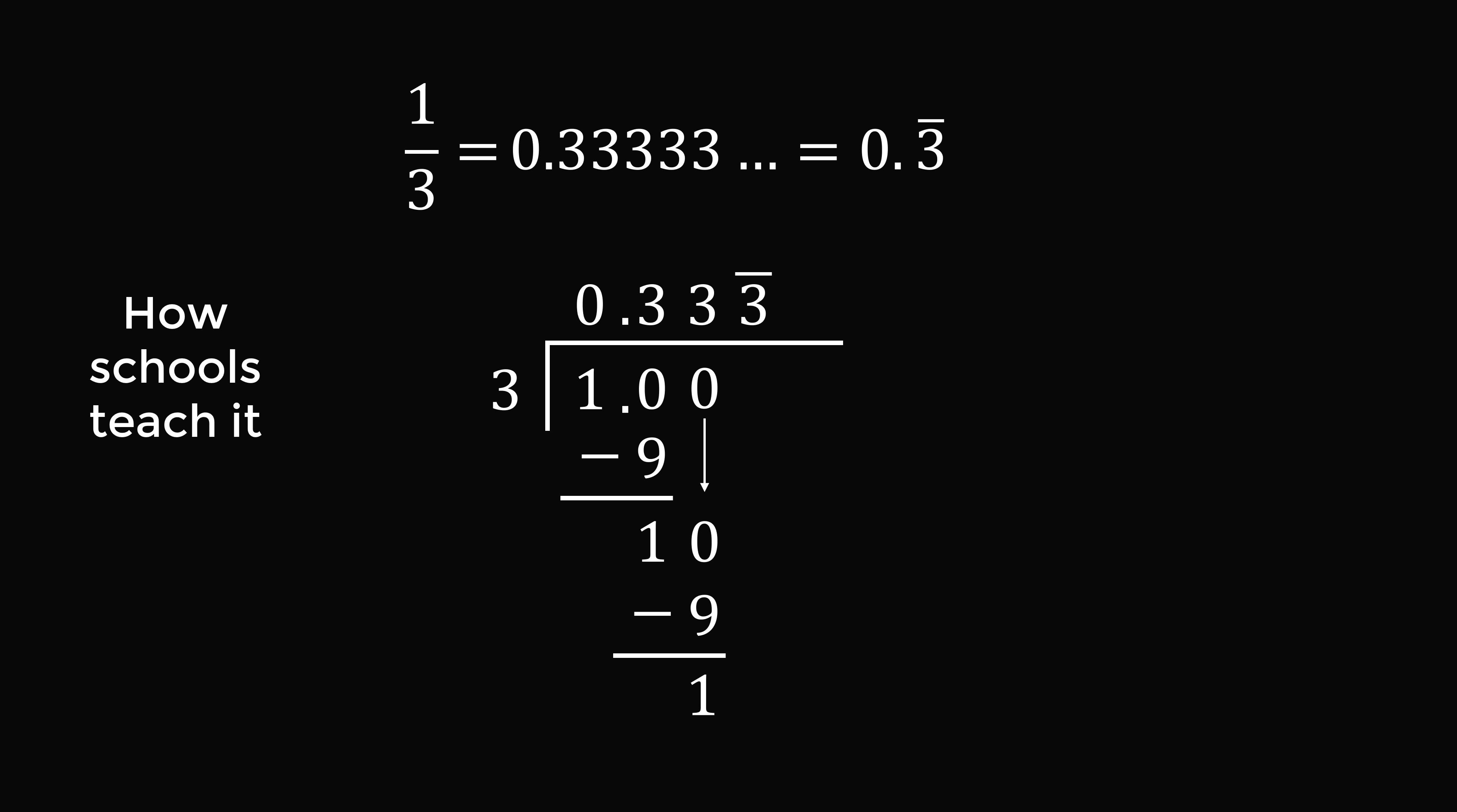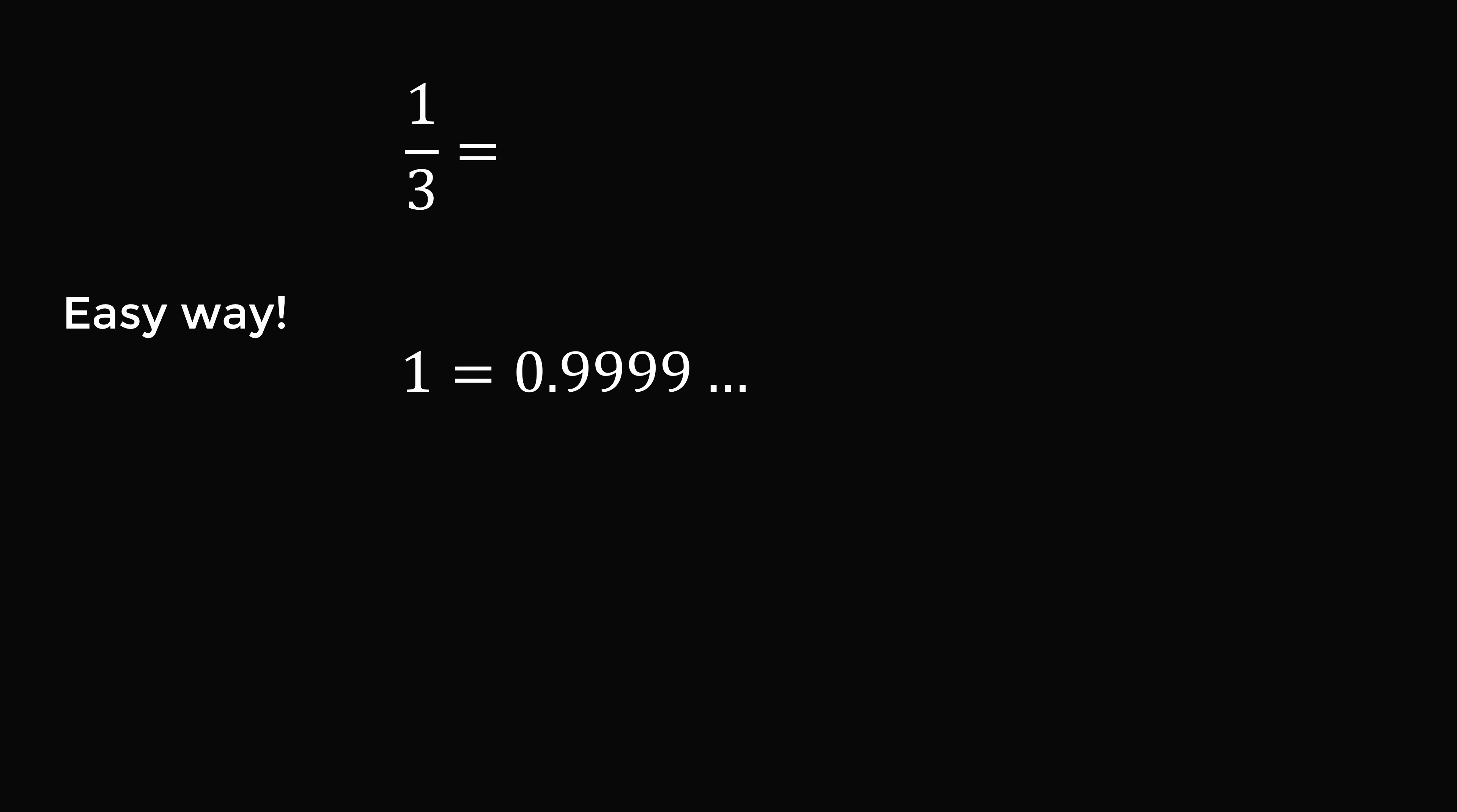But is there an easier way to do this? So here is a trick I think that is pretty cool. We all know that 1 is equal to 0.9 repeating. So if we divide both sides by 3, we get 1 over 3 is equal to 0.9 repeating divided by 3. So let's do this calculation. 0.9 divided by 3 is equal to 0.3. We then shift 1 over. Then 9 divided by 3 is equal to 3. We shift 1 over. 9 divided by 3 is equal to 3. And we see that this pattern is going to go on forever. So 1 divided by 3 is equal to 0.3 repeating.